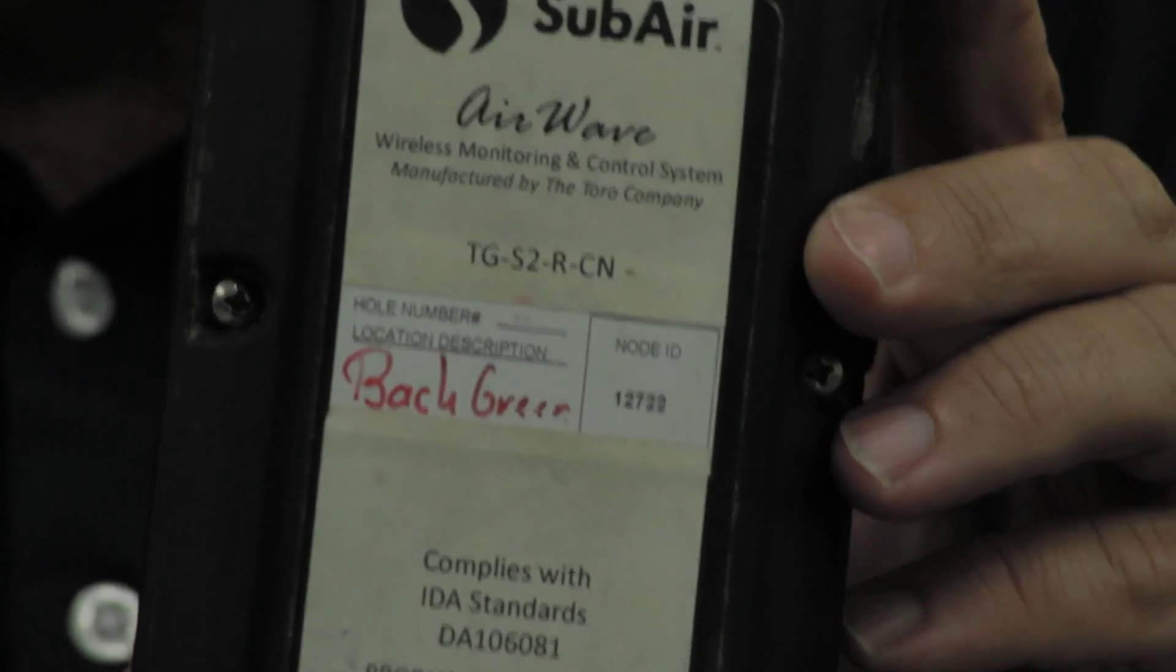The Subair system is a complex system and it has many tools. We talked a little bit out on the golf course about how we have sensors in the greens and this is an example of what one sensor looks like.